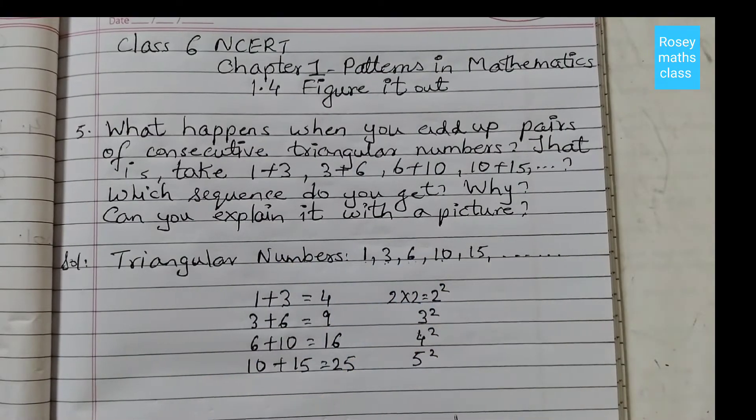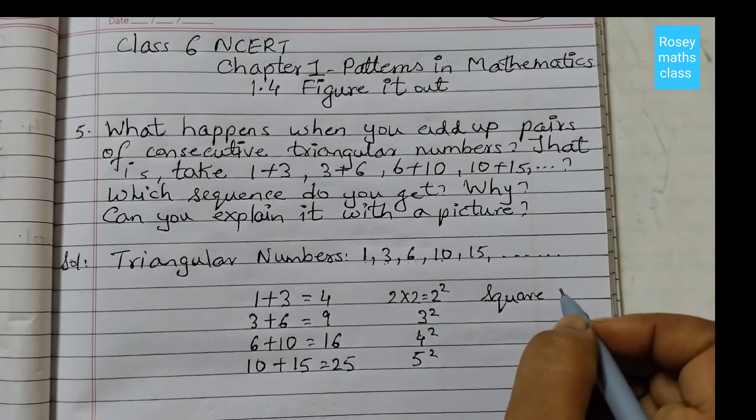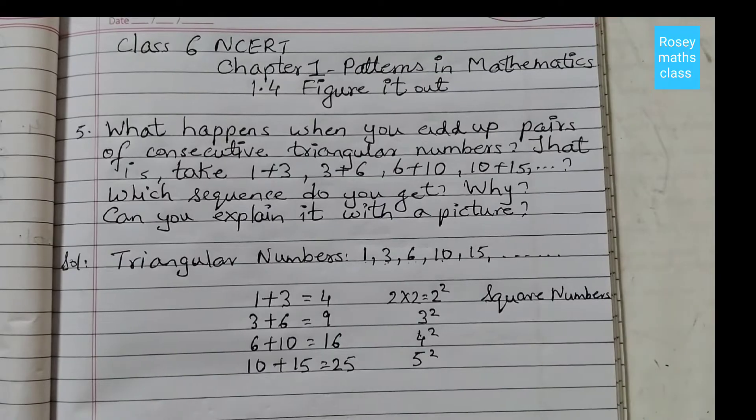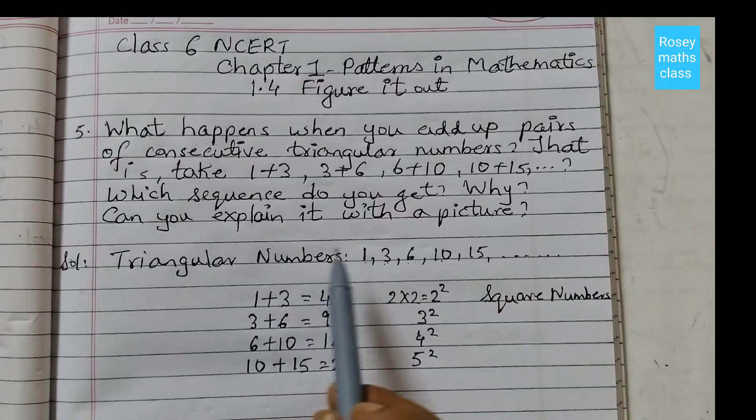That means which sequence do you get? We get the sequence of square numbers. You can see squares or square numbers. This is the sequence of square numbers. Why do we get square numbers?